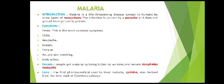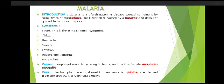Malaria is a life-threatening disease spread to humans by certain types of mosquitoes. This infection is caused by a parasite and does not spread from person to person. Symptoms include fever, chills, headache, sweats, fatigue, nausea, vomiting, and body aches. People get malaria by being bitten by an infected female Anopheles mosquito. The first pharmaceutical used to treat malaria, quinine, was derived from the tree bark of Cinchona (Cinchona calisaya).